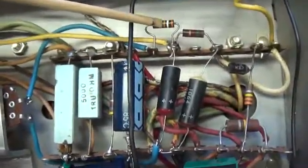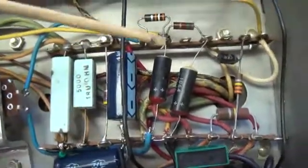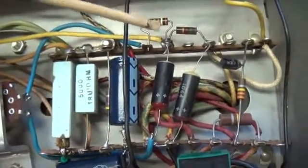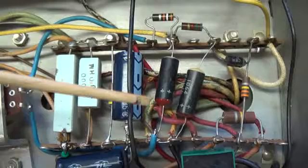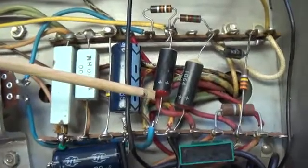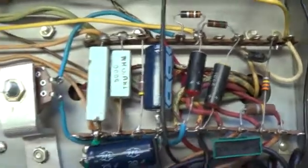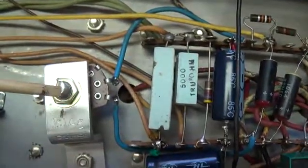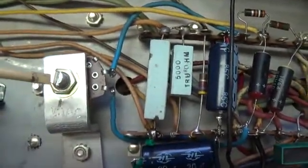Our values then going from 39 to 49k allow us to bracket the original 47k so we can go above and we can go below that fixed resistor that was in place. Almost assuredly we will come up with a setting here that will give us the proper bias for our tubes.